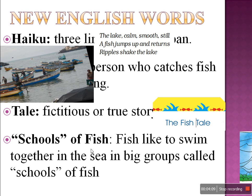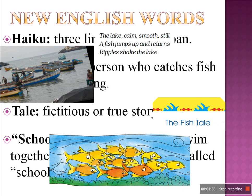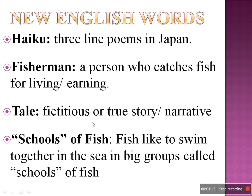Schools of fish — you can see fish swimming together. This is called schools of fish. Let us revise these new words: Haiku — three line poem in Japan. Fisherman — a person who catches fish for living or earning. Tale — fictitious or true story, narrative. Schools of fish — fish like to swim together in the sea in big groups called schools of fish.